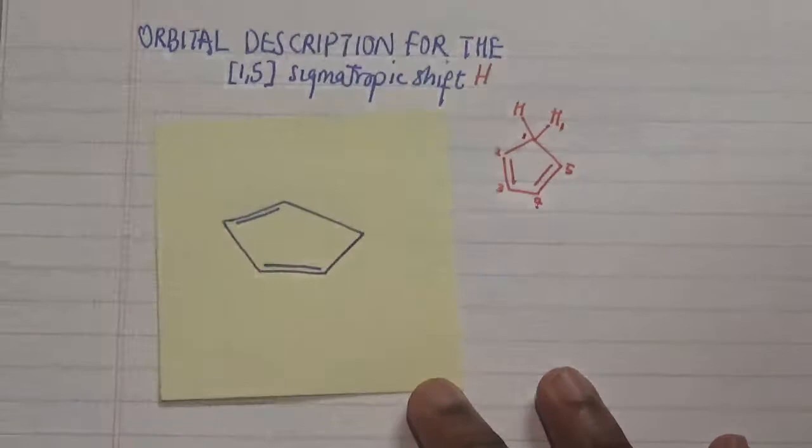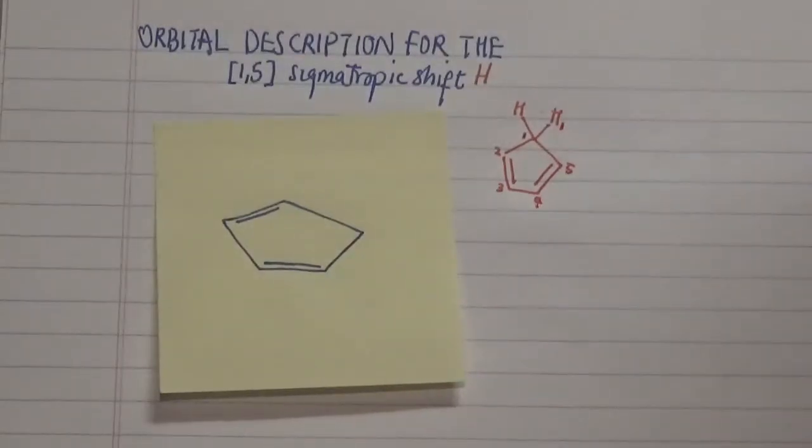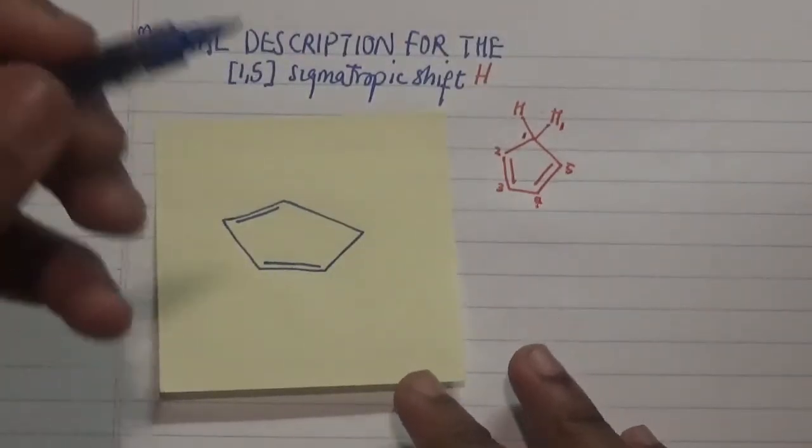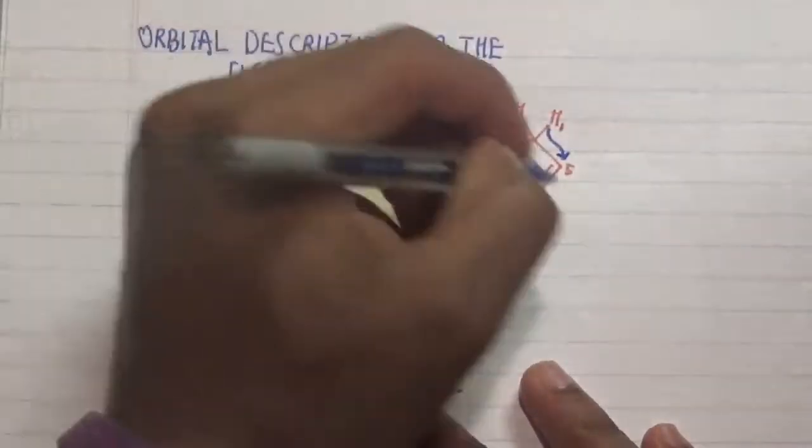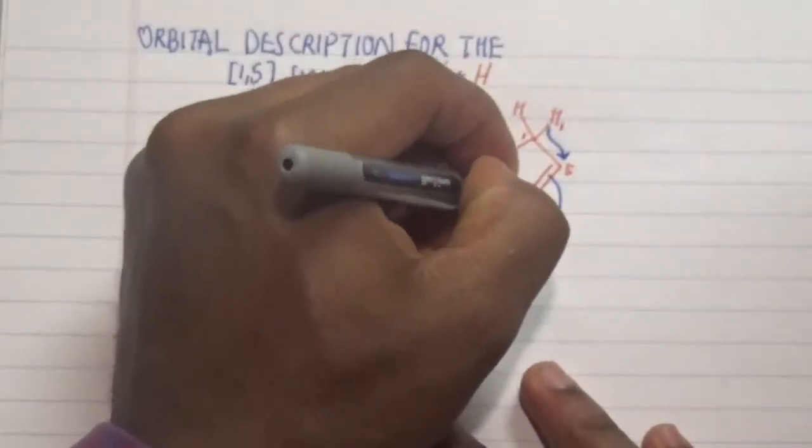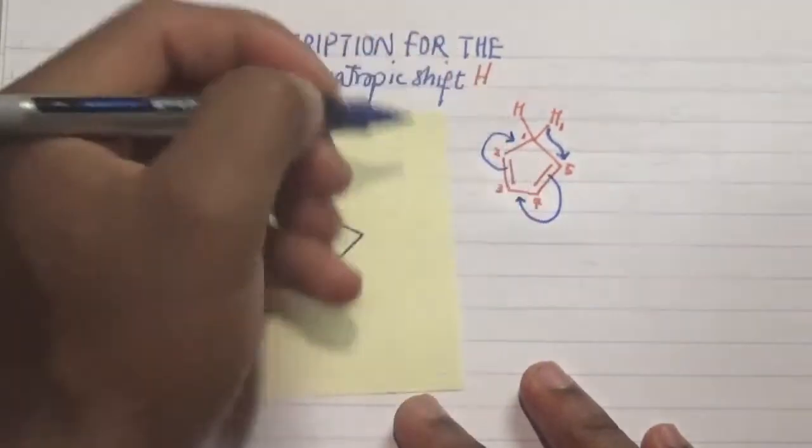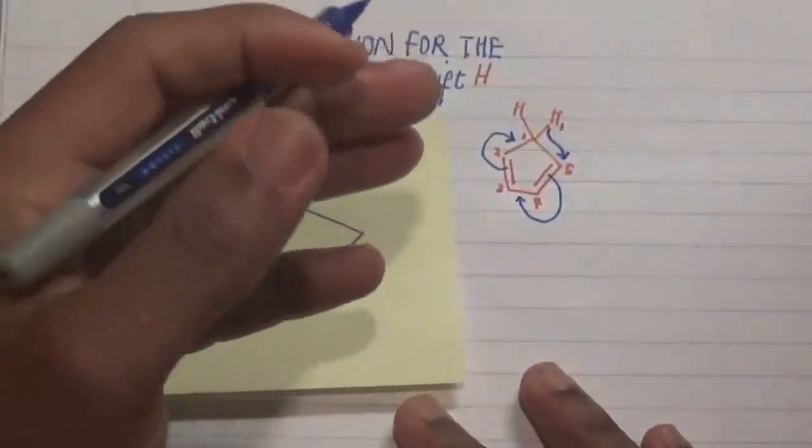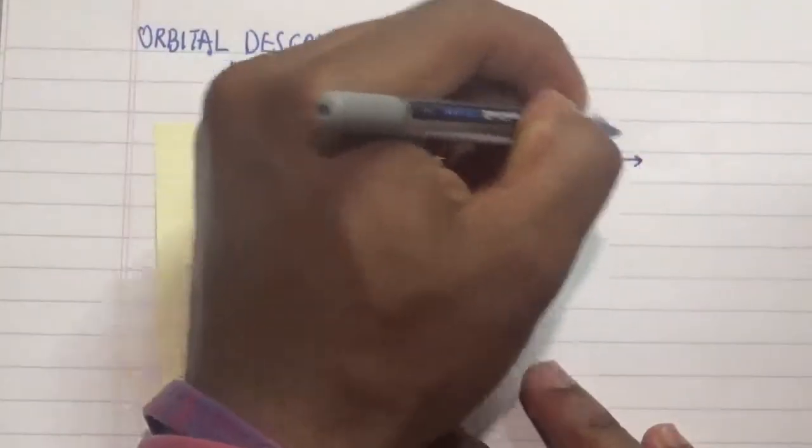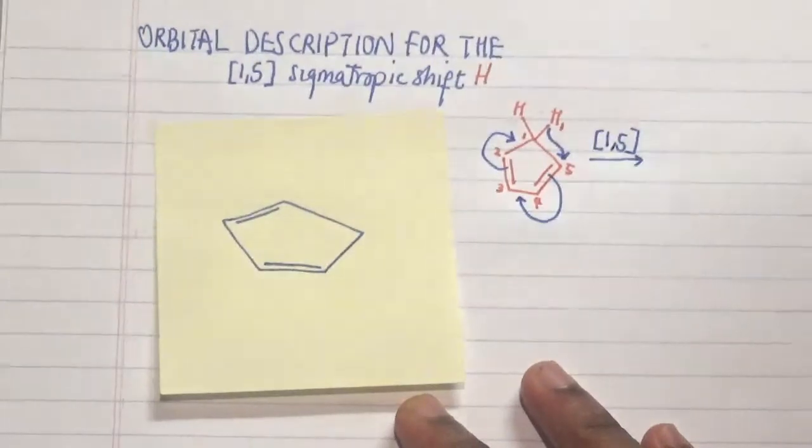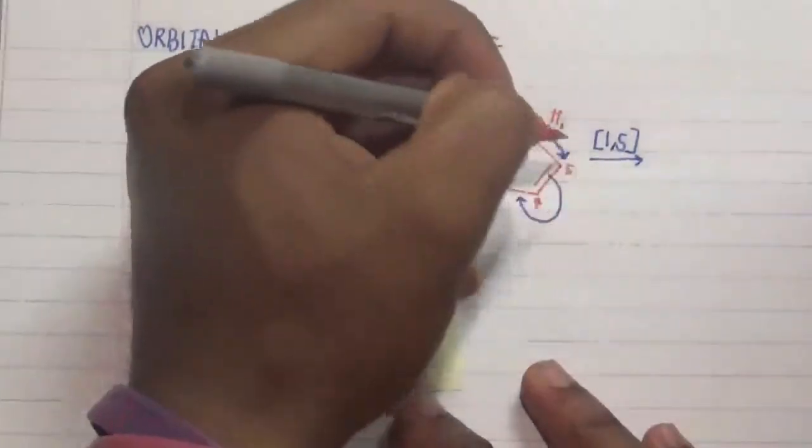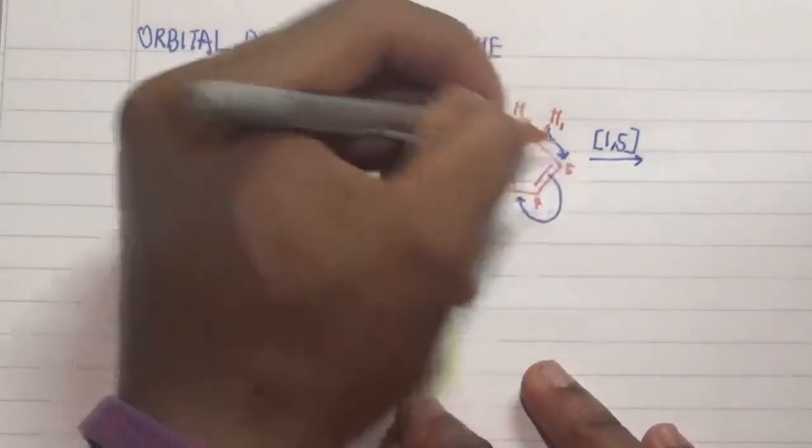So if we want to perform this particular 1,5 sigmatropic hydrogen shift, what we do is move this over here and then this performs its regular electrocyclic process, and what we have as a result is this 1,5 hydrogen shift where our hydrogen moves from carbon 1 to carbon 5.